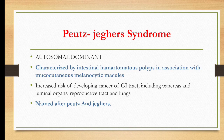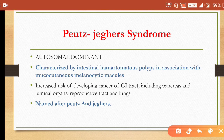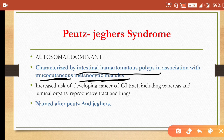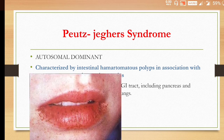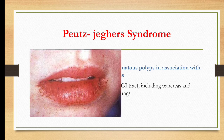Peutz-Jeghers syndrome is also inherited as autosomal dominant. It is characterized by intestinal hamartomatous polyps in association with mucocutaneous melanocytic macules. The true peculiarity is intestinal hamartomatous polyps. The macules are present on the skin as well as mucous membranes, mainly involving the oral cavity and intestine. There are increased risks of developing cancer of the gastrointestinal tract including pancreas, luminal organs (small and large intestine), reproductive tract, and lungs. Here you can see these macules around the perioral region.